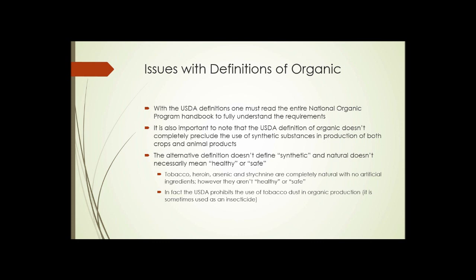There are some issues with those definitions. With the USDA definition, one has to read the entire National Organic Program handbook to fully understand the requirements. It's also important to note that the USDA definition doesn't completely preclude the use of synthetic substances in production of both crops and animal products. The alternative definition doesn't define 'synthetic,' and natural doesn't necessarily mean healthy or safe. For instance, tobacco, heroin, arsenic, and strychnine are completely natural with no artificial ingredients, but they aren't healthy or safe. In fact, the USDA prohibits the use of tobacco dust in organic production — tobacco dust is sometimes used as an insecticide, but not in organic production.